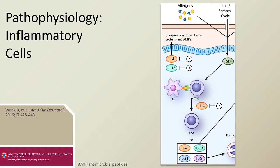TSLP stimulates dendritic cells to bind to naive Th0 cells and mature them into Th2 cells. These mature and activated Th2 cells release a variety of pro-inflammatory cytokines, including interleukin-4, 13, 31, and 5.